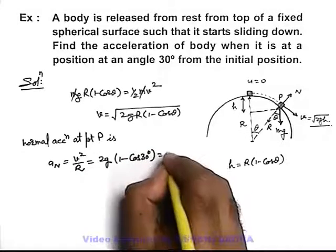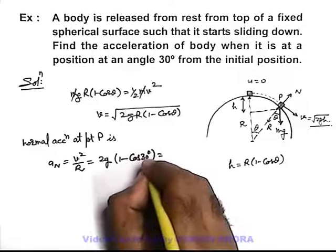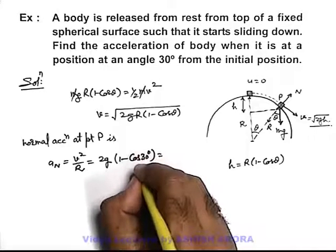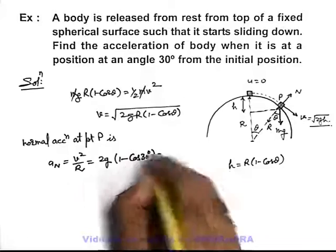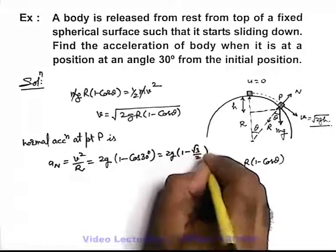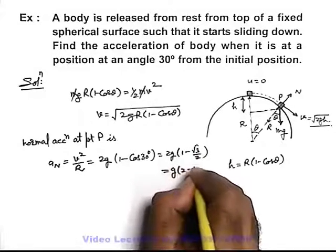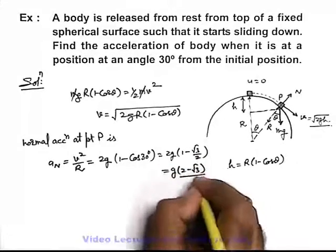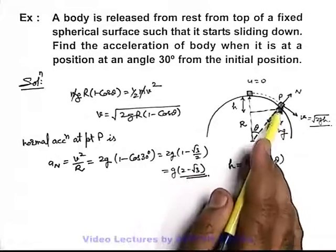So we will get the result as, cos 30 we can write as root 3 by 2. This can be written as 2g times (1 - root 3/2), which can be written as g times (2 - root 3). This is the normal acceleration of the body at point P.